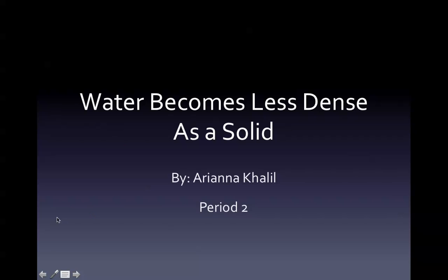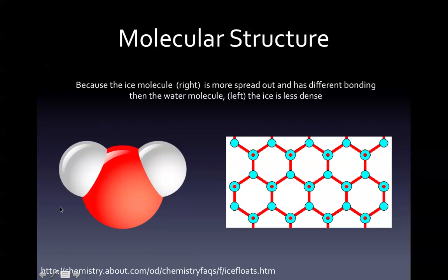Water is less dense as a solid. When looking at the molecular structure of ice and water, ice is less dense because of hydrogen bonding. Water molecules are made from oxygen and hydrogen atoms that are joined by a covalent bond and other weaker bonds. The weaker bonds, or hydrogen bonds, are between the positive and negative atoms of other nearby water molecules. As water cools, the hydrogen bonds adjust to hold the negatively charged atoms apart. This is why it is less dense.